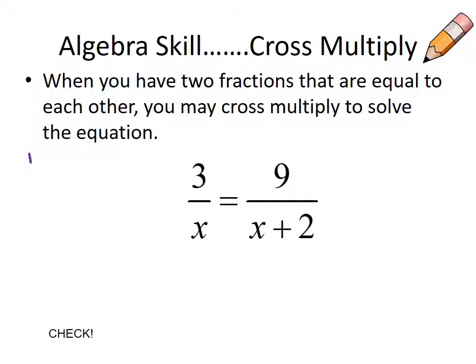If I have 1 half equals x over 5, I cross multiply and get 5 equals 2x. Divide both sides by 2 and I have my solution of 5 halves. You've done these simple cross multiplying problems in the past, but now we have expressions so we have to be careful of following our rules of distribution, FOIL, and combining like terms.